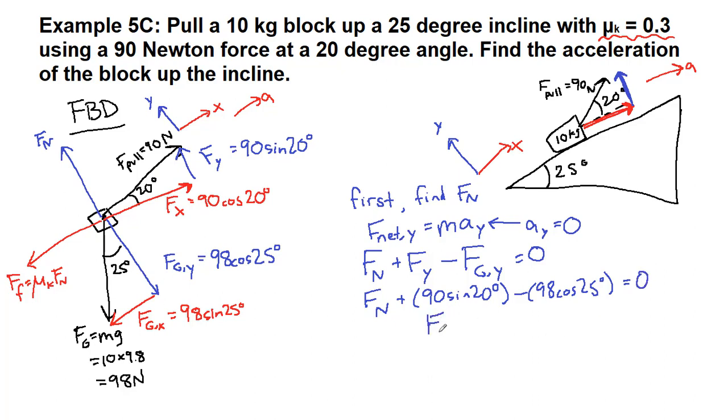And so when we solve this, we get all those numbers and get them to the other side, we get that the normal force is equal to 58.0 newtons. So now we move on to the x direction.